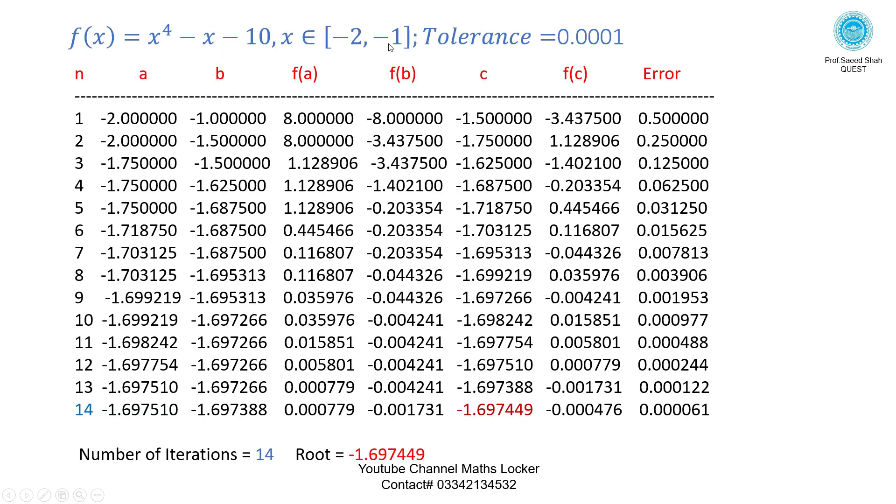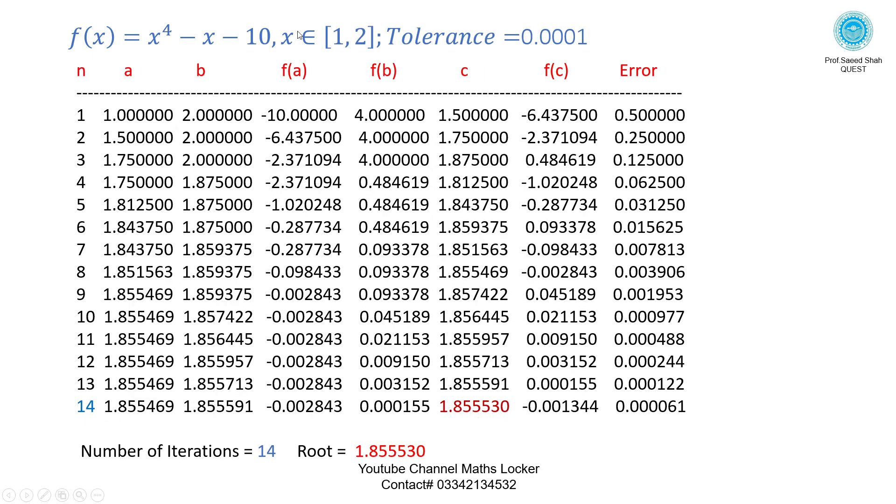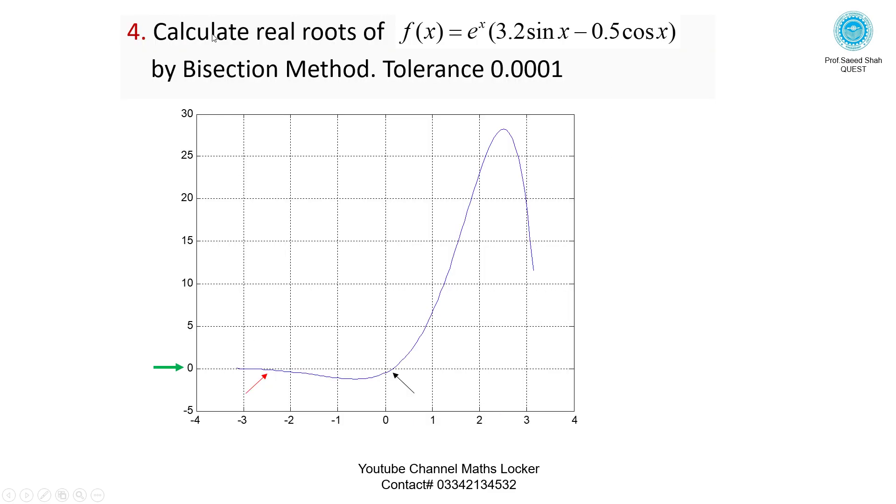In the interval -2 and -1, after 14 iterations we have a root of 1.853.